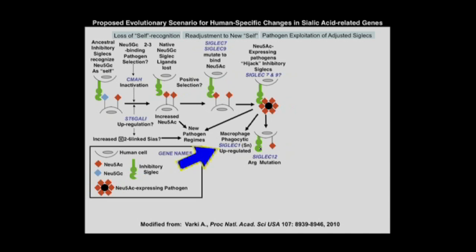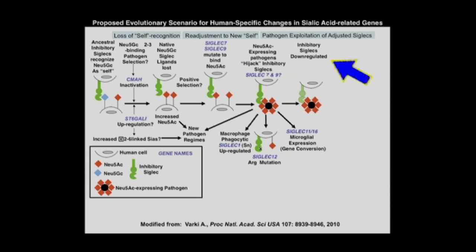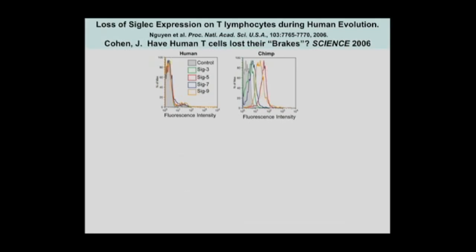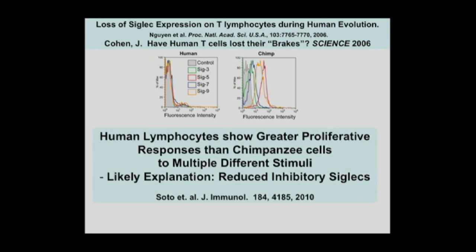Various other changes occurred in the lymphoid system, in epithelium, in the brain, and so on. So what are you going to do if you're under attack by these Klingons with their cloaking devices? Well, you've got to retreat. What seems to have happened is humans have inhibited and down-regulated these inhibitory siglecs. Here's a figure from some years ago: human blood cells from volunteers show not much siglec on T lymphocytes, whereas chimpanzees have a lot of these, as do gorillas and bonobos. John Cohen, writing about our work, suggested maybe human T cells have lost their brakes, and we had some evidence for this.